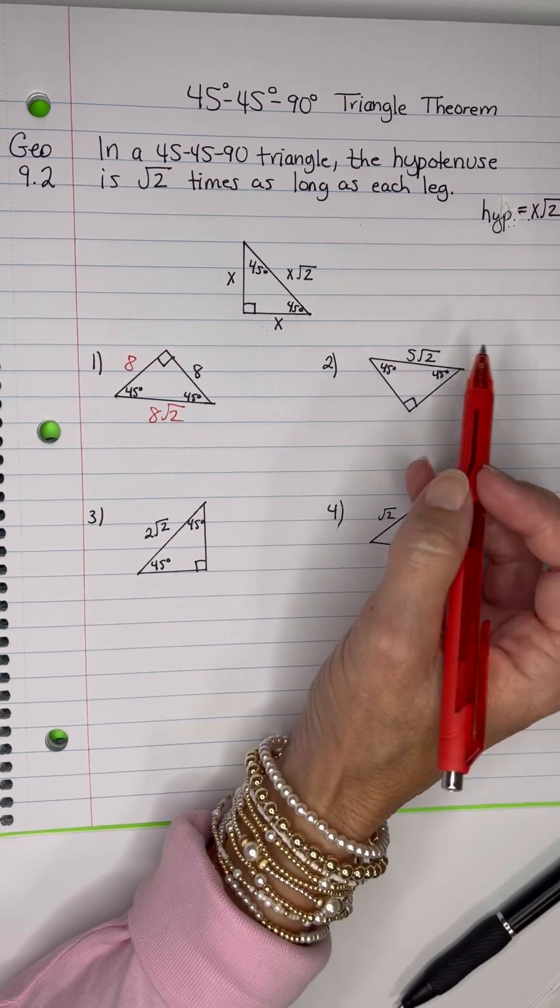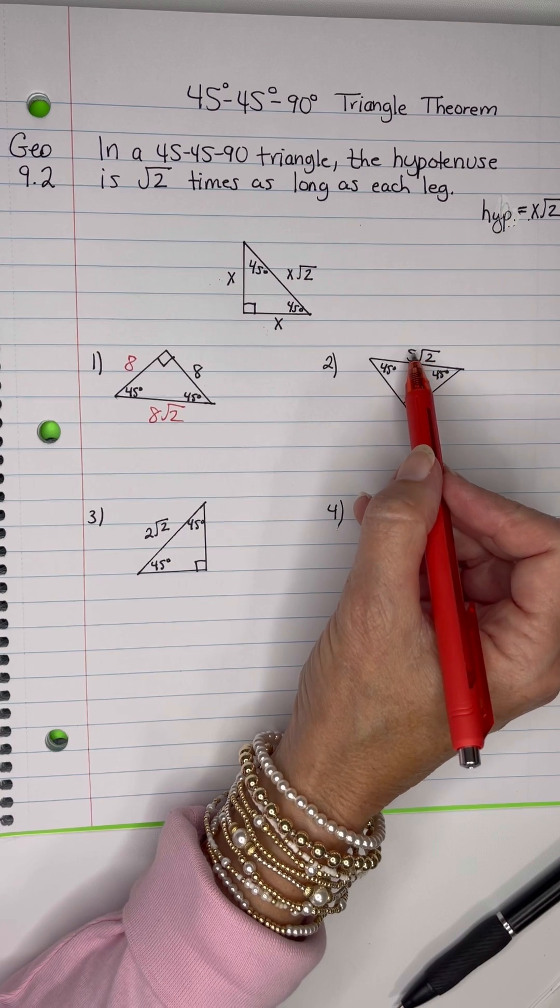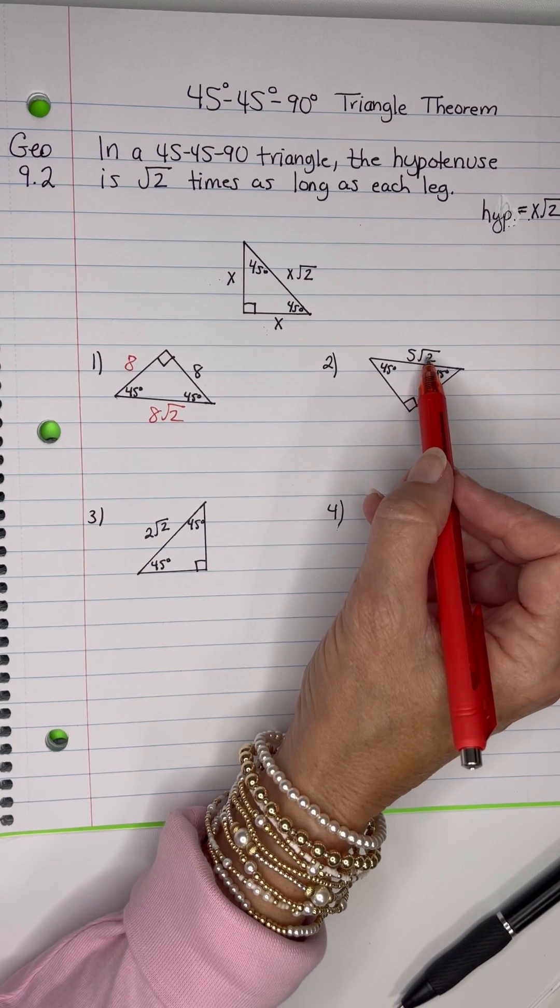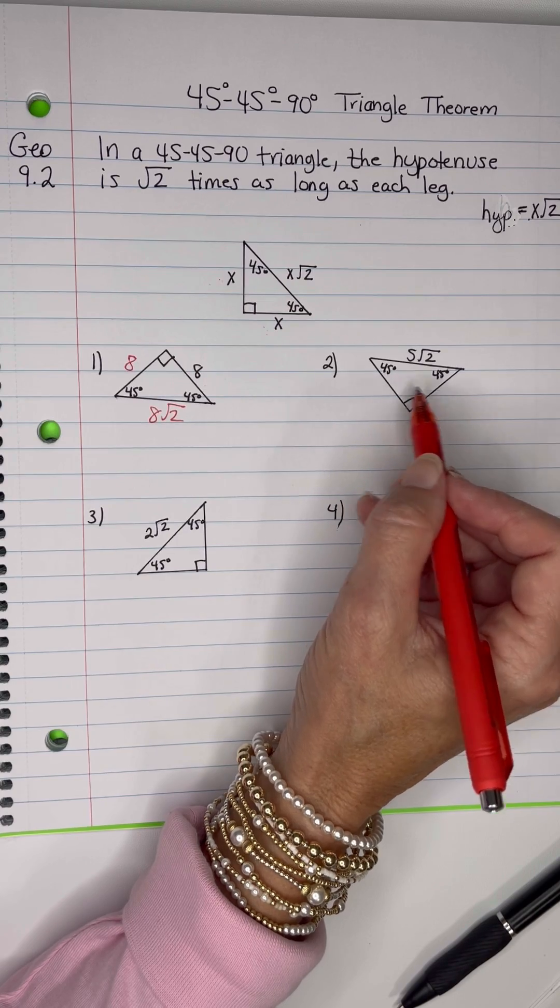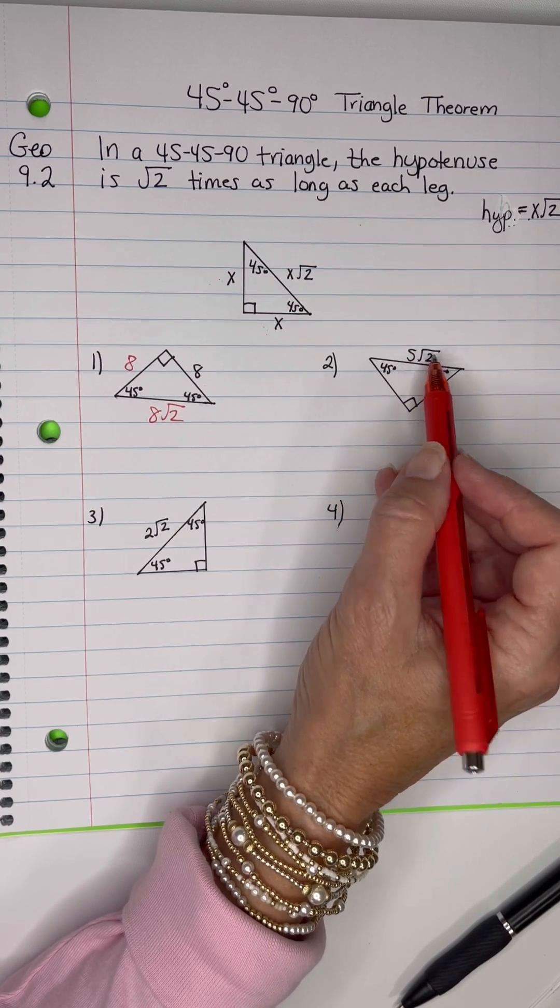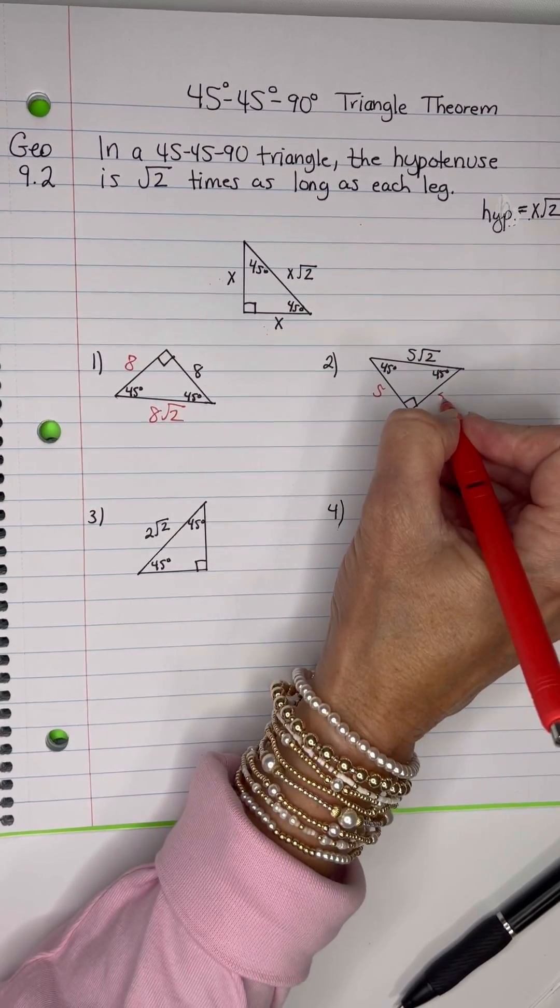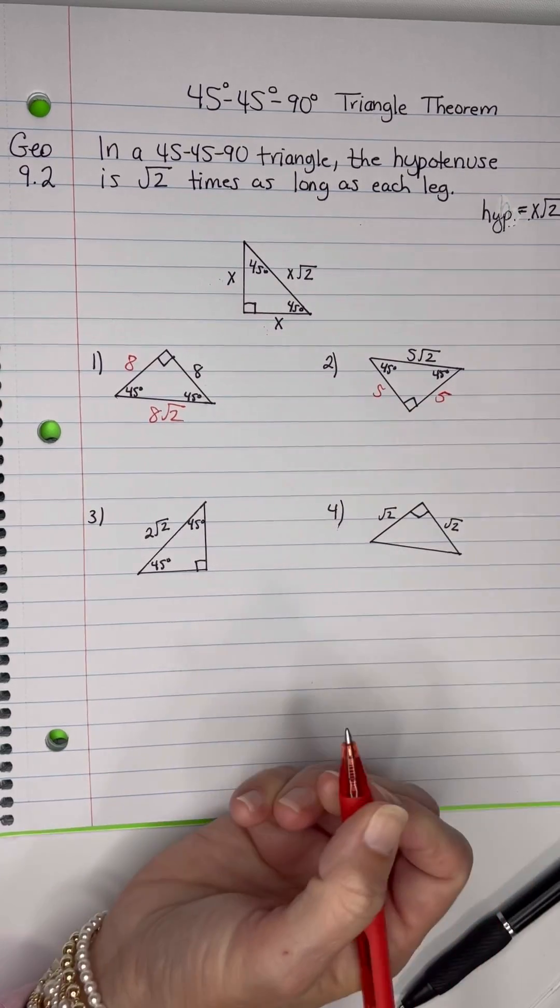Then on this one right here, we've got the hypotenuse, which is 5 root 2. So we know that the legs are going to be the same, and it's whatever is in front of root 2. So that's going to be 5 here and 5 there. Very quick to notice.